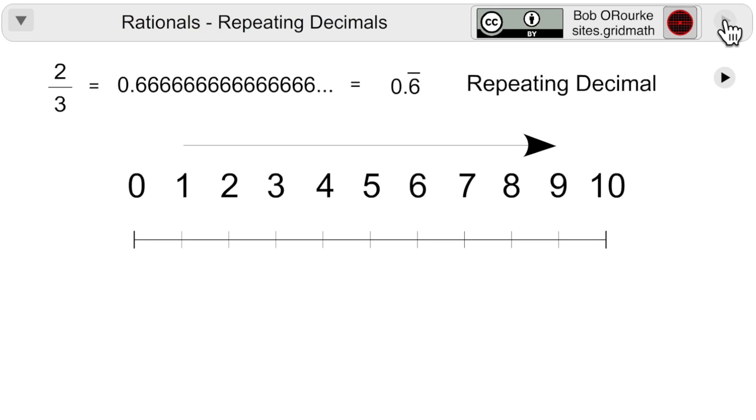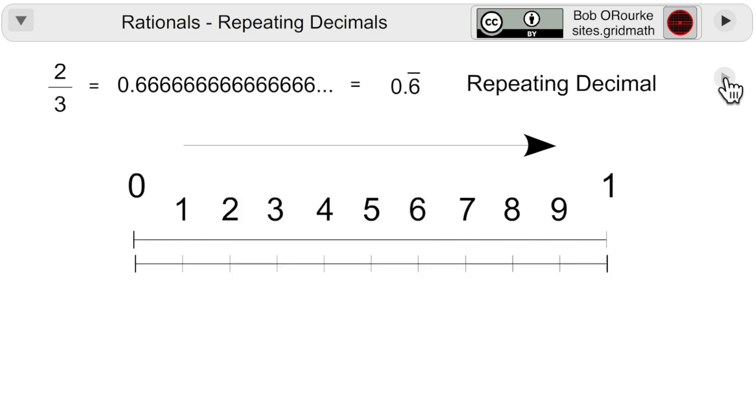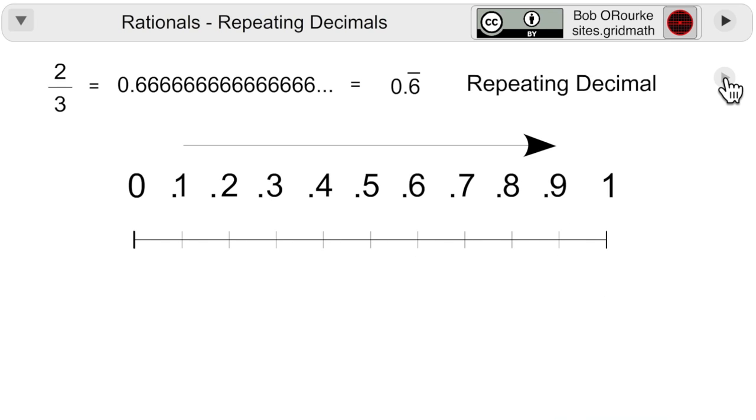Now we're going to look at the rationals on the number line, specifically the repeating decimals. Zoom in on the unit value that is subdivided into tenths and the decimal points are put in.